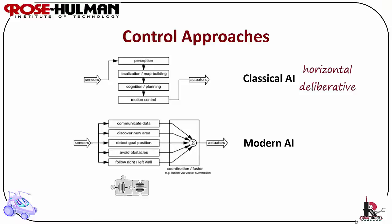Classical AI is based upon a complete model, function-based, and horizontal decomposition, and it is very similar to deliberative or hierarchical control. Noting the graphic, for classical AI control you would start with sensing and perception, then move on to cognition and localization, planning, and motion control.